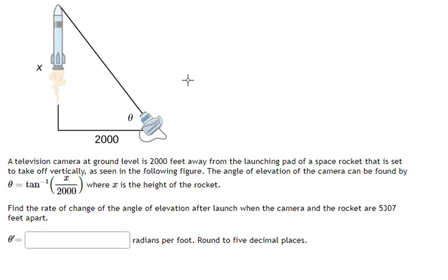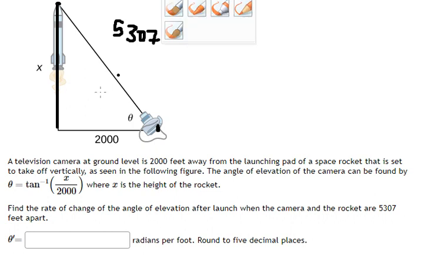Hello everybody, today I want to show you how to answer this problem. We know that the distance from here to the camera is about 5,307 feet. We know that this is a right triangle.